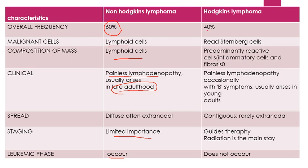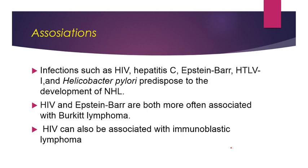Hodgkin's Lymphoma constitutes 40 percent of lymphomas, and Reed-Sternberg cells are present — these cells resemble owl eyes. The mass is composed predominantly of reactive cells, that is inflammatory cells and fibrosis. Lymphadenopathy is painless, and occasionally B symptoms are also present like night sweats and fever. The spread is contiguous and rarely extranodal. Staging is important in Hodgkin's to guide therapy, and the leukemic phase does not occur.